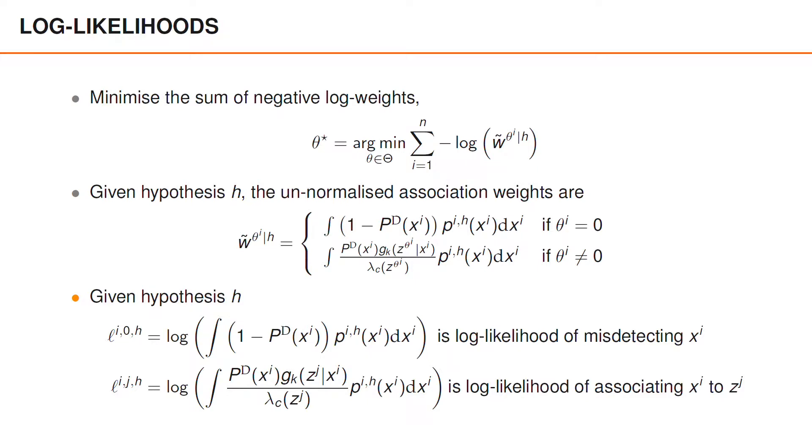Given hypothesis H, we define the log likelihood of misdetecting object i and the log likelihood of associating object i to detection j as shown here. This is just the logarithm of the corresponding unnormalized association weights.